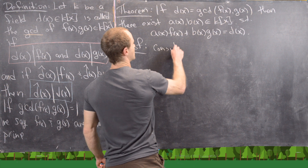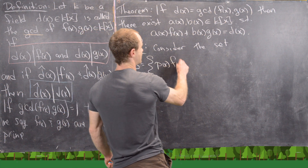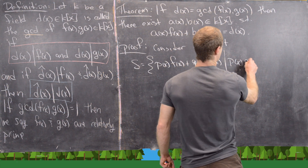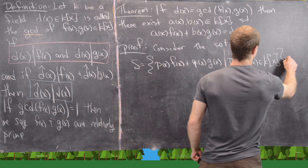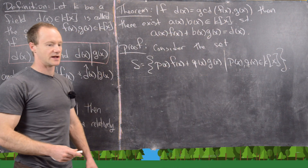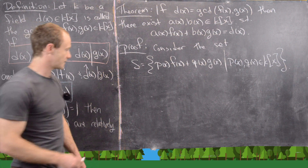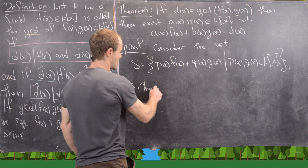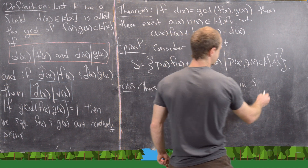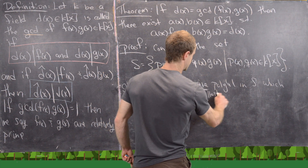We consider the set S, which consists of all polynomials of the form P(X)·F(X) + Q(X)·G(X) as P(X) and Q(X) range over all polynomials in K[X]. Before proceeding, there is a key observation: there is a unique polynomial in S which is monic and has the smallest degree.